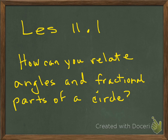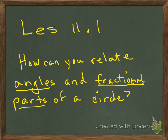In Lesson 11.1, our essential question is: how can you relate angles and fractional parts of a circle? I understand angles, and I certainly understand the concept of a fraction, but I'm talking about fractional parts, and I'm looking at the word circle. This might be a little confusing. So I think what we're going to do is start off by using something that is very familiar to you. Let's get started with our investigation.